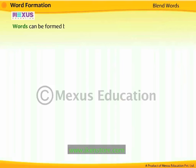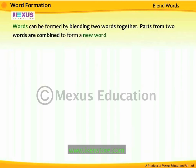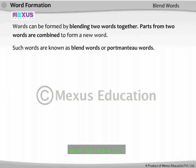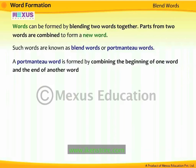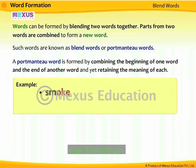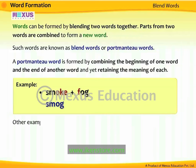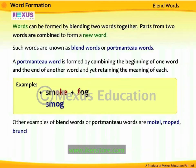Words can be formed by blending two words together — parts from two words are combined to form a new word. Such words are known as blend words or portmanteau words. A portmanteau word is formed by combining the beginning of one word and the end of another while retaining the meaning of each. For example, blending 'smoke' and 'fog' forms the portmanteau word 'smog,' which refers to a mixture of smoke fumes and fog. Other examples include 'motel,' 'moped,' and 'brunch.'